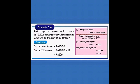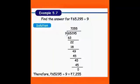Let's see the next example. Find the answer for rupees 65295 divided by 9. Here we want to know the 9 table. First we will write dividend and divisor. So 9 into 65295.